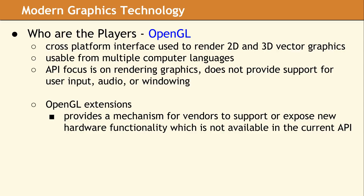OpenGL is the oldest API still used today. It is cross-platform, supported on nearly every OS and almost all hardware. It is also cross-language, since the interface is callable from C. It is purely a graphics rendering API and does not address any other facets of the user interface, such as audio, user input, networking, or window management. This means that every OpenGL program needs at least some platform-specific code or calls to a third-party library to set up a display surface. OpenGL has a rich and very frequently used extension system, which allows GPU vendors to expose new hardware functionality without needing to wait for a new version of the OpenGL specification.